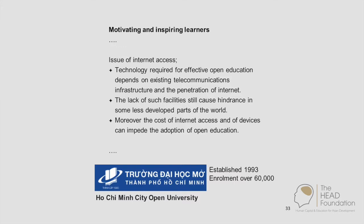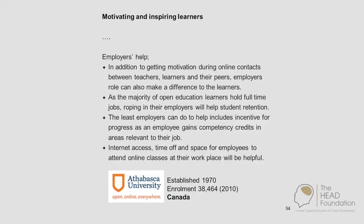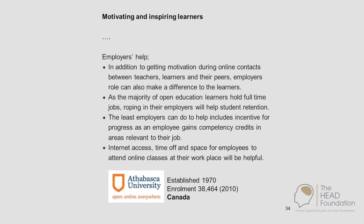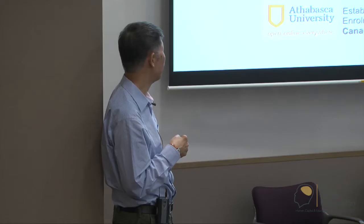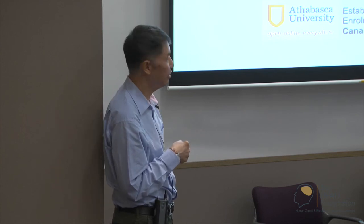The issue of internet access still has problems. Technology required for effective open education depends on telecommunications infrastructure and internet penetration. Employers' role can also make a difference — as a majority of open education learners hold full-time jobs, roping in their employers to help student retention is key. The least employers can do is include incentives for progress as an employee gains competency credits in areas relevant to their job.